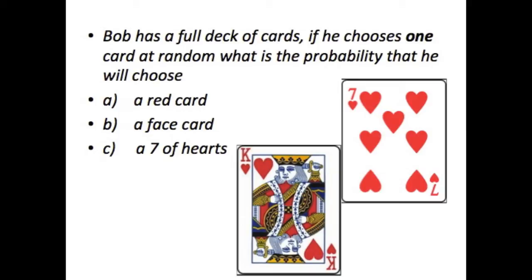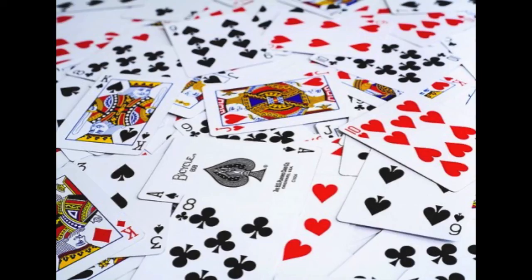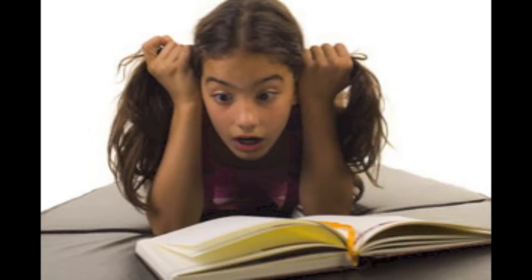A student may have a good understanding of probability, but here's an example: If he chooses one card at random from a deck, what is the probability that he will choose a red card, a face card, and a seven of hearts? This question implies that students know how many cards are in a deck, the fact that a deck consists of four suits and two colors, and what a face card is and how many there are in a deck. A student may have a good understanding of probability, but being unfamiliar with the deck of cards hinders their ability to solve the problem.